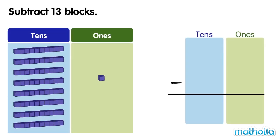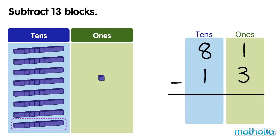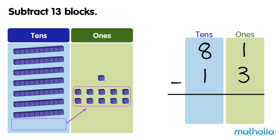There are 81 blocks. We subtract 13 blocks. Let's start by subtracting the ones. We cannot subtract 3 ones from 1 one. So we regroup 1 ten into 10 ones.